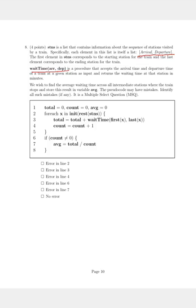We wish to find the average waiting time across all intermediate stations. This here is to be noted, intermediate stations where the train stops and store this result in the variable average or avg as it's given here.